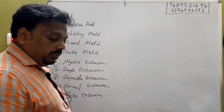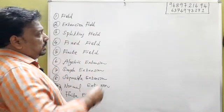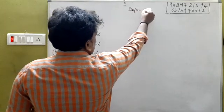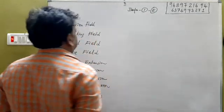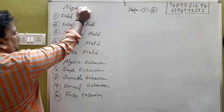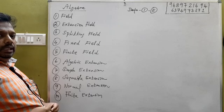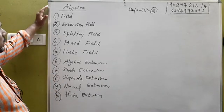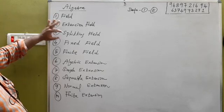Ok students, if you are trying to find the definition of definition, you can find the definition of definition. The definition of definition is E. You have to see a picture with it. The topics include extension fields, tweeting fields, fixed fields.